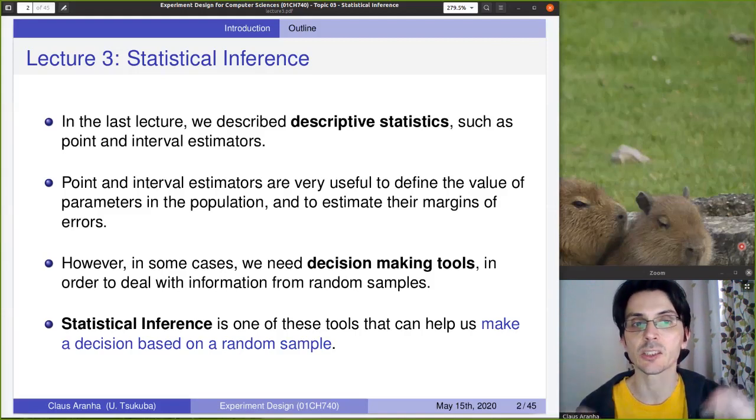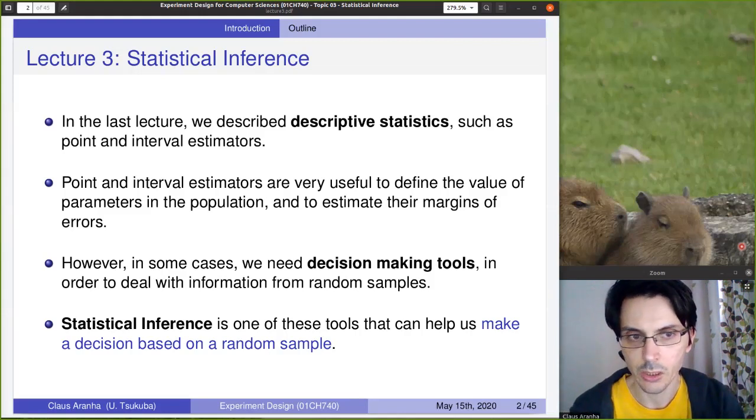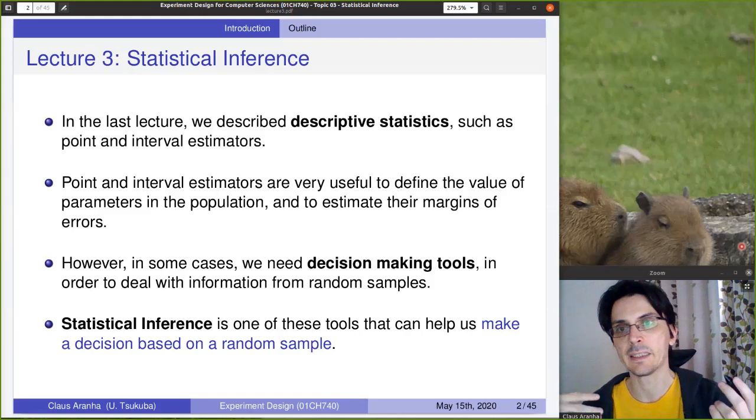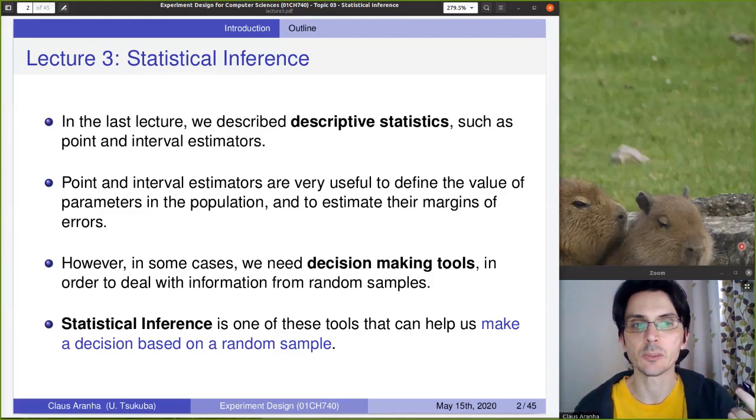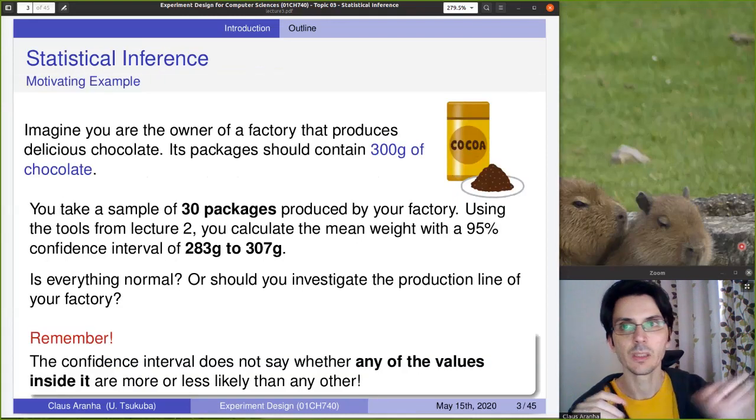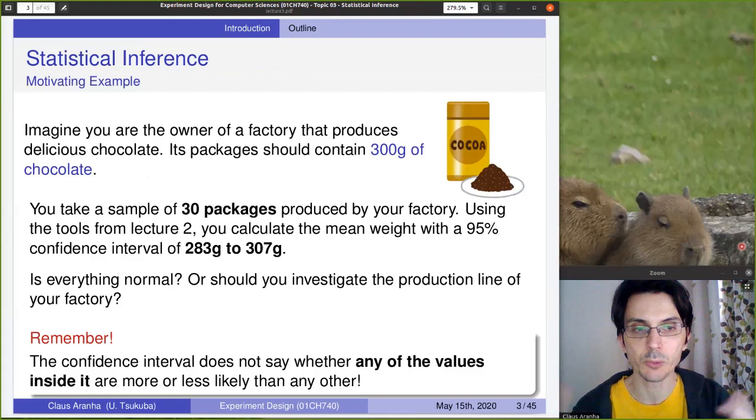However, in some cases, this is not enough. In some cases, we need decision making tools to deal with information that we get from random samples. In these cases, one of the tools that we can use is called statistical inference. Statistical inference is a technique that can help us make a decision based on a random sample.